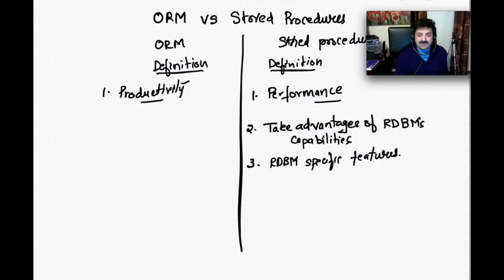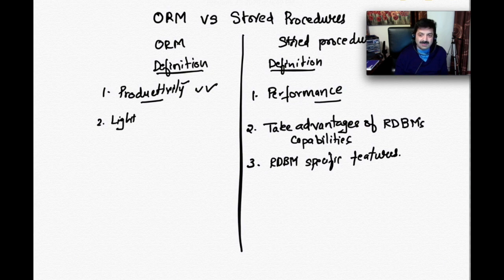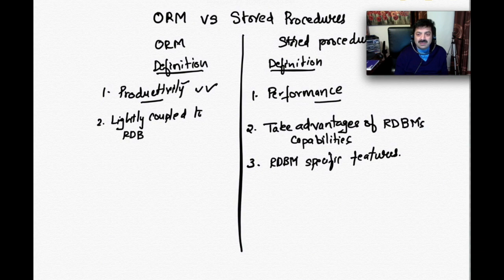Now, the benefits of Object Relational Mappers. The first is productivity — these frameworks take your objects, persist them to the database, and retrieve them from the database. You don't have to write all those INSERT, UPDATE, DELETE, or SELECT statements. Because of this, your application is loosely coupled to the RDBMS database.